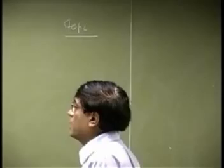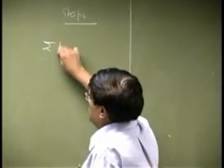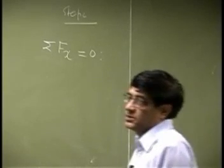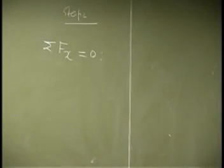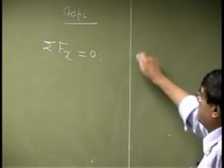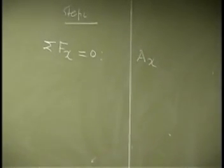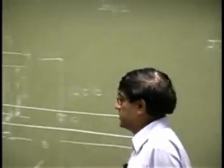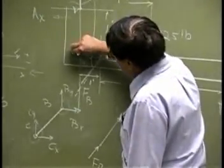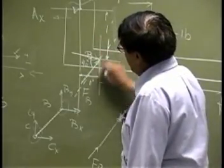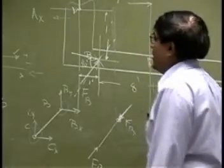We go through the same set: sum of the force along x to be 0. You have the reaction at A, and this force will give 2 components. There is going to be a component in the x direction and there is going to be a component in the y direction.